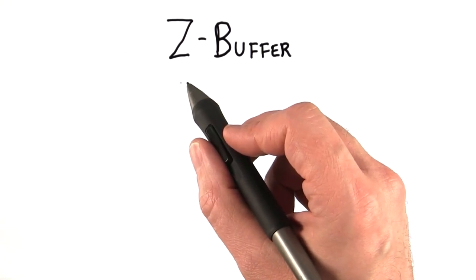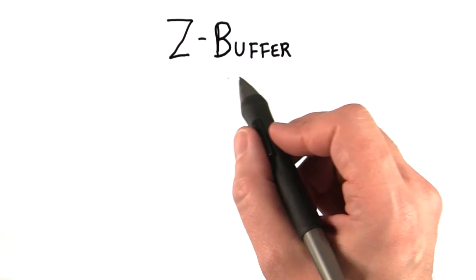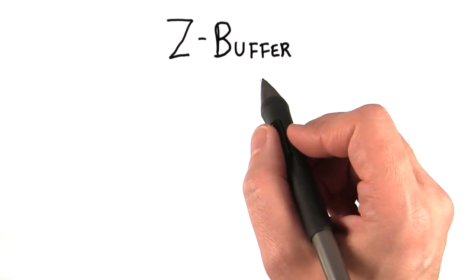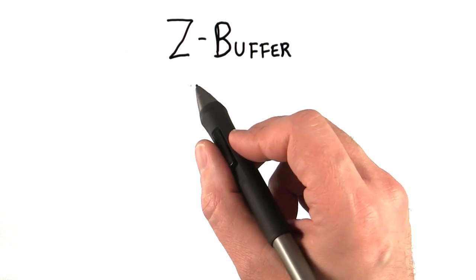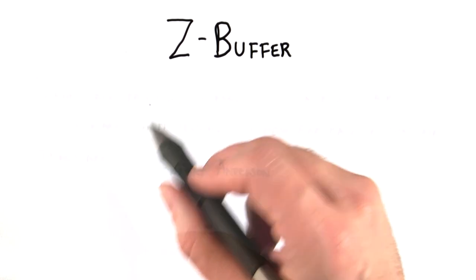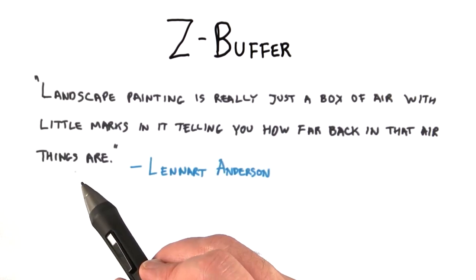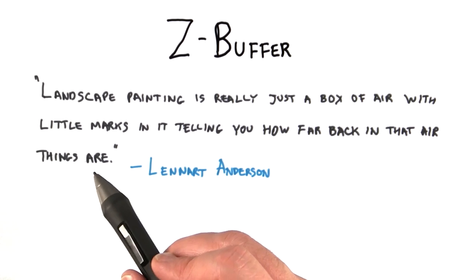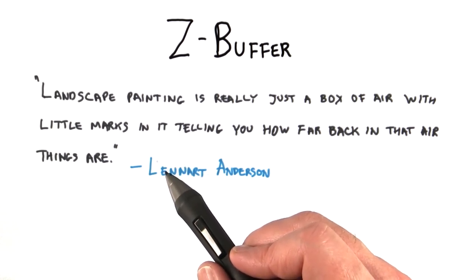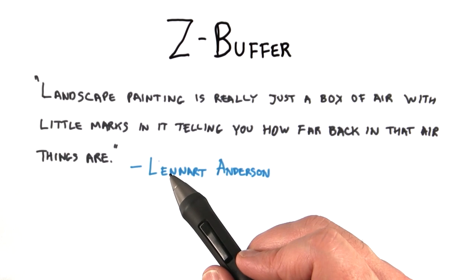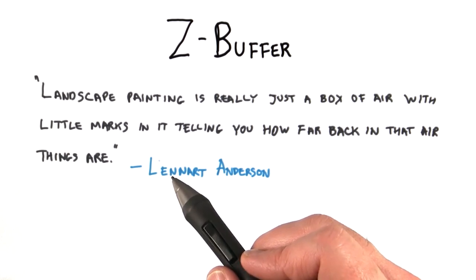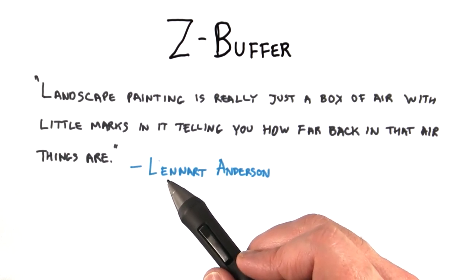The way the GPU usually solves the visibility problem is by using what is called a Z-buffer — or, if you have British leanings, it's pronounced Z-buffer. The artist Leonard Anderson once said, 'Landscape painting is really just a box of error with little marks in it telling you how far back in that error things are.' It's not the pithiest of quotes, but this is a pretty good description of the Z-buffer algorithm.